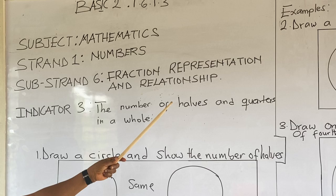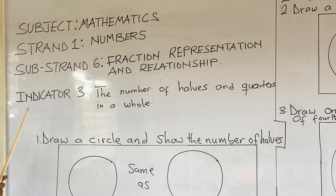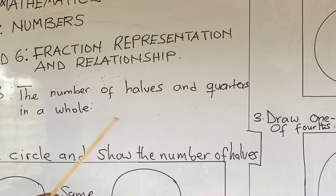Sub-strand 6, which is fraction representation and relationship. And it is also taken from Indicator 3, that is the number of halves and quarters in a whole.